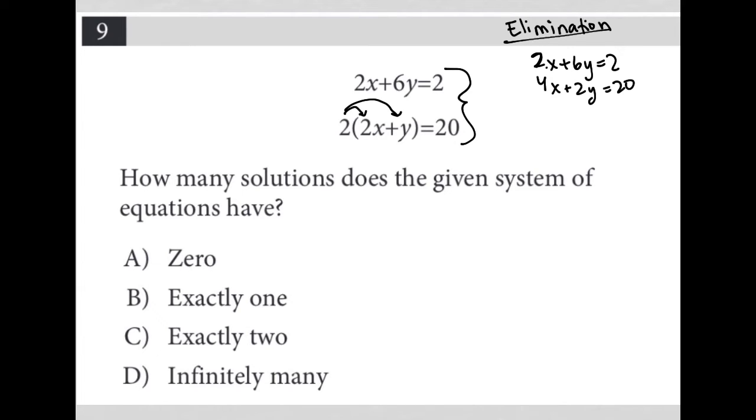To eliminate, we decide which variable to cross out. I'm going to cross out the x value. To do that, I'll multiply the top equation by -2.